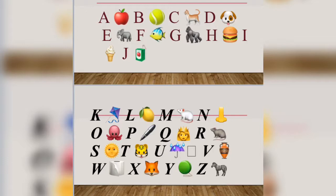E is for Elephant. A, A. Elephant. F is for Fish. F, F. Fish.